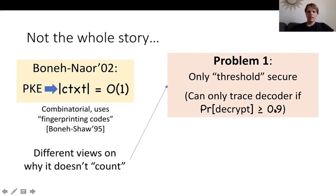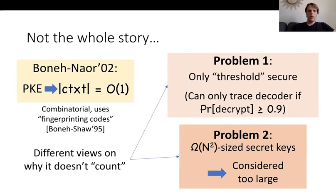The threshold constant — say 0.9 — is somewhat arbitrary, and we can imagine shrinking it. But once you have fixed the percentage of the time you want the decoder to decrypt, you can actually easily fool tracing by decrypting slightly less often. So if you decrypt with probability 0.8, you can avoid tracing. The other problem with the Boneh-Naor traitor tracing scheme is that the secret keys are extremely large — quadratic in the number of users — which is considered too large to be useful.